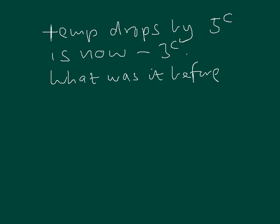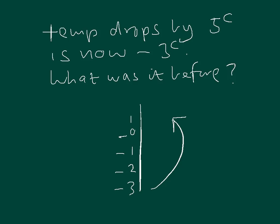Our final problem: we're told the temperature drops by 5 degrees and it's now minus 3. What was it before? A number line will help us. We need our minus 3 on the line. Now if it's dropped, it would have been higher, so we need to go back up by 5 degrees — because we know it's dropped. I'll mark the numbers going up in ones so we can clearly see what we're pointing at.